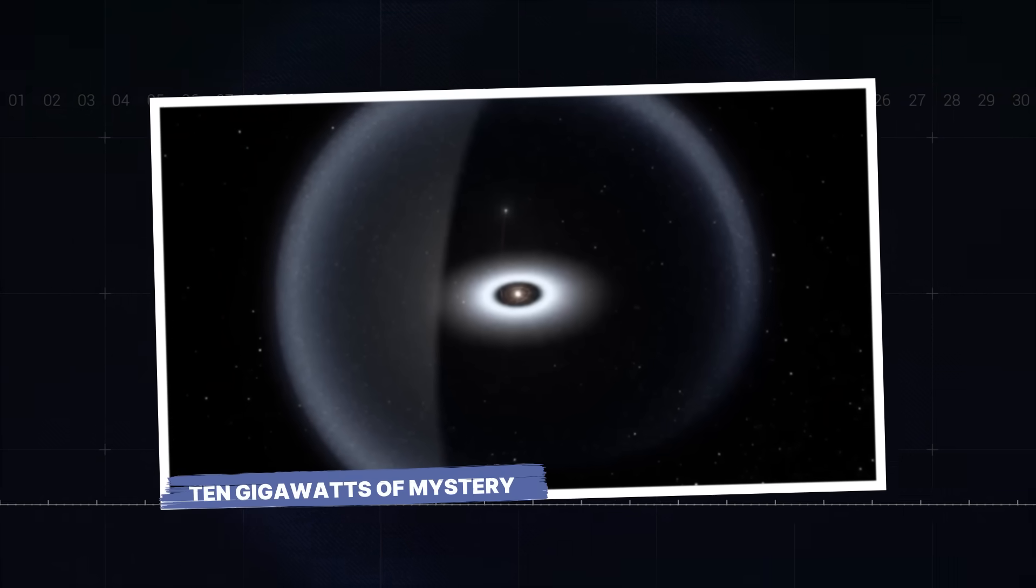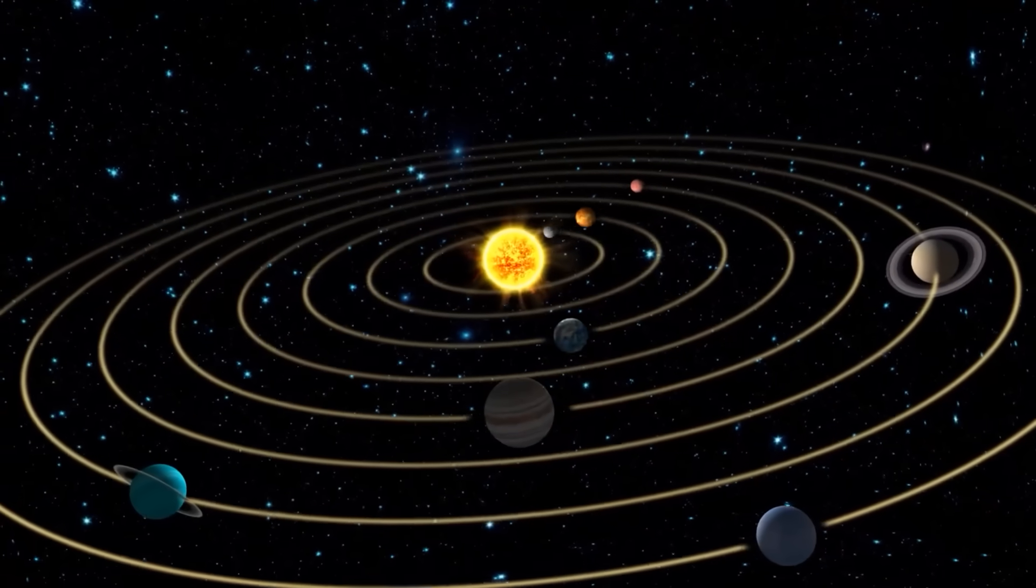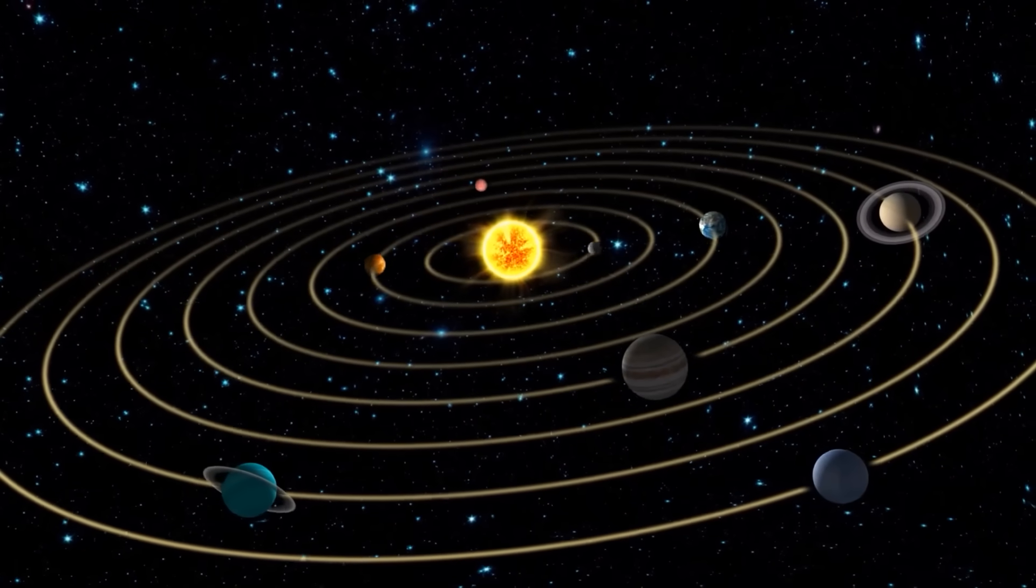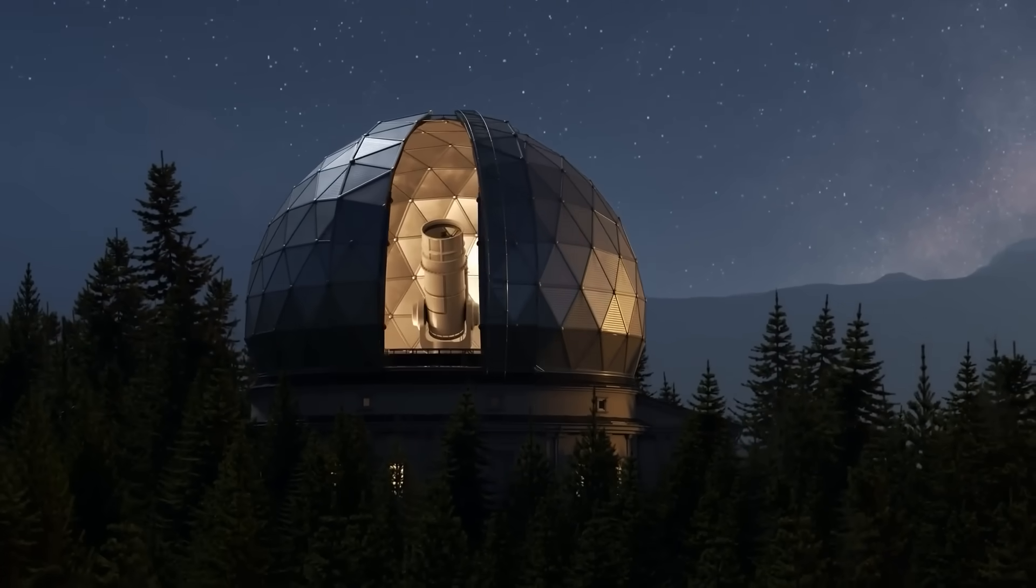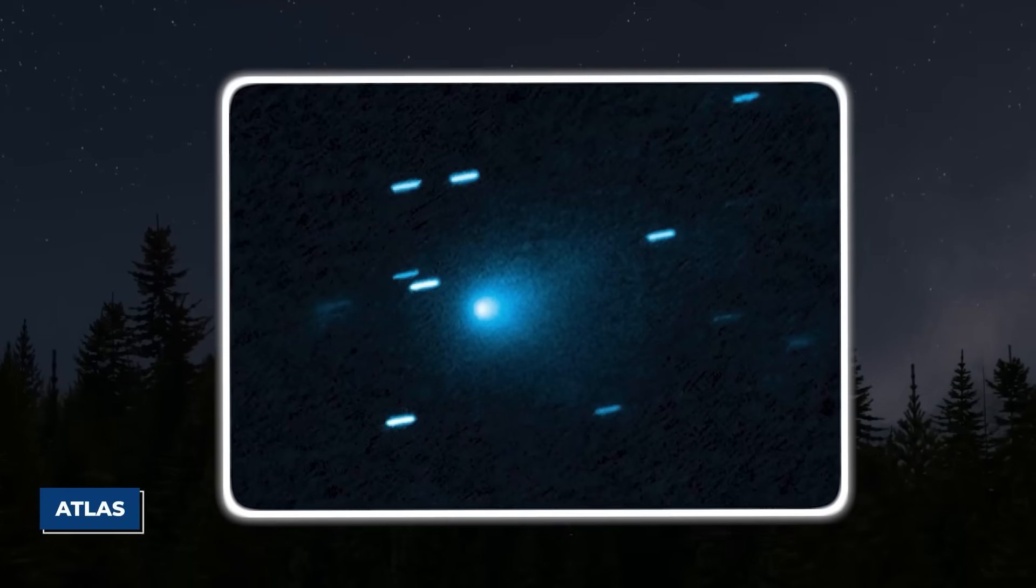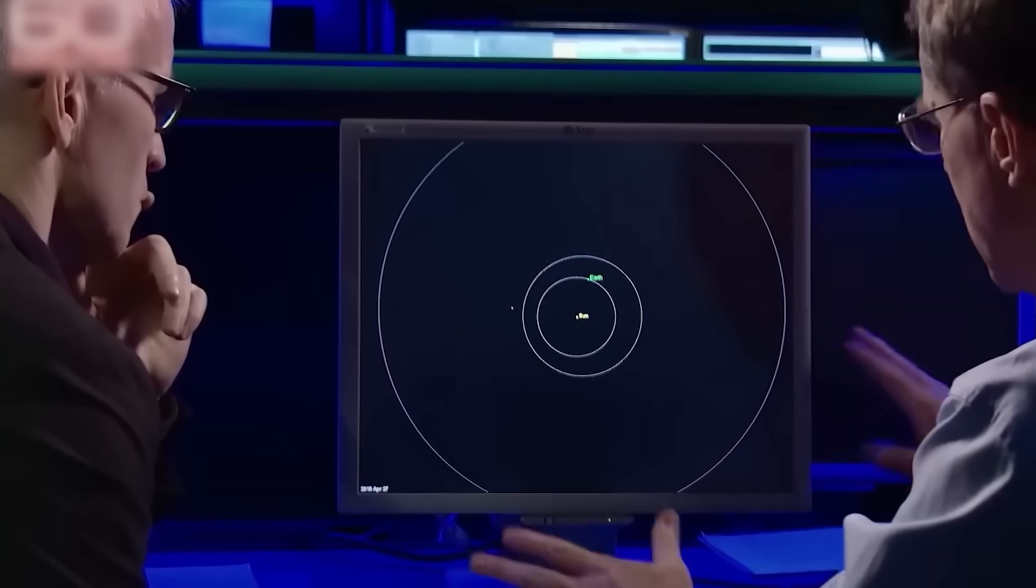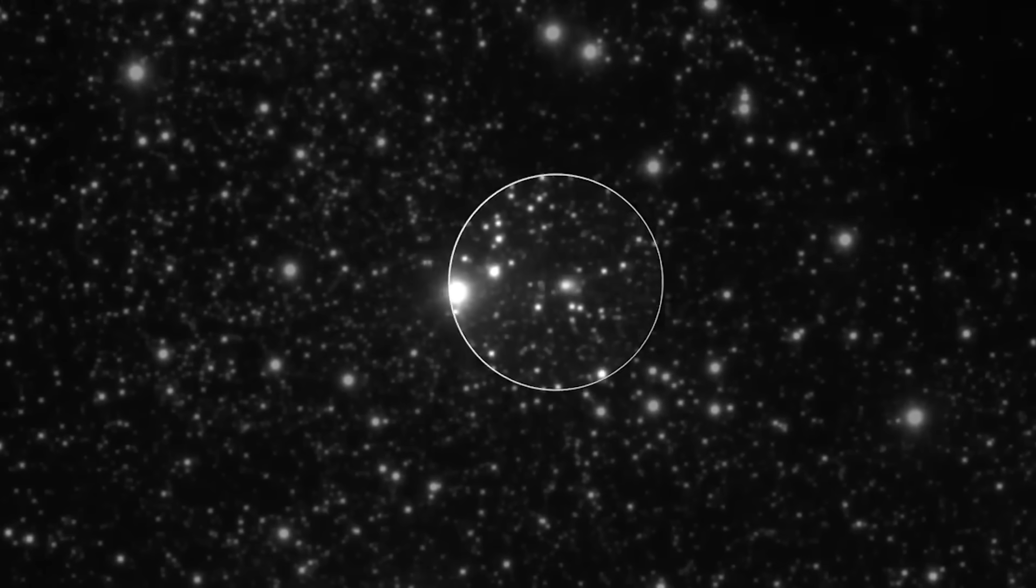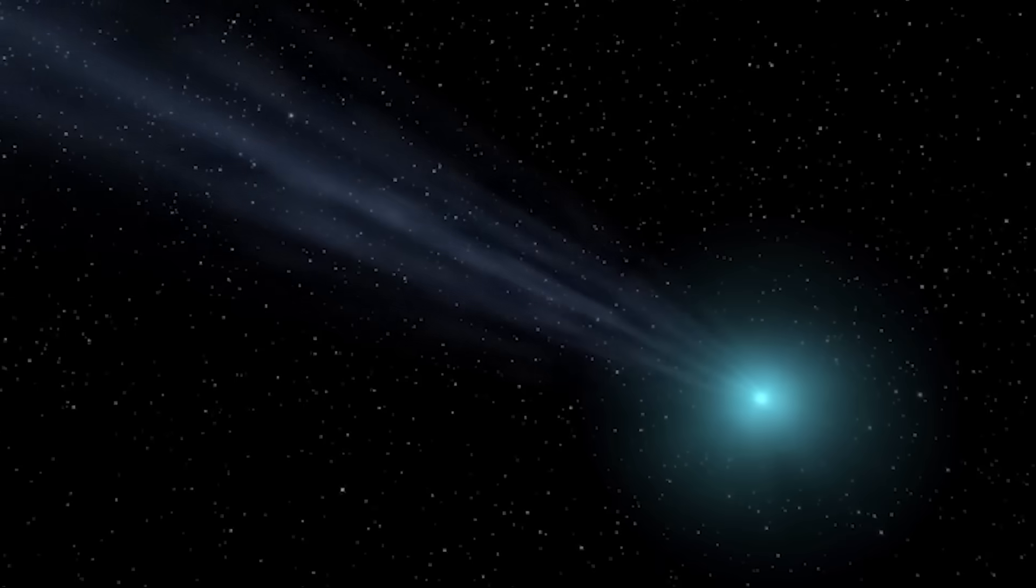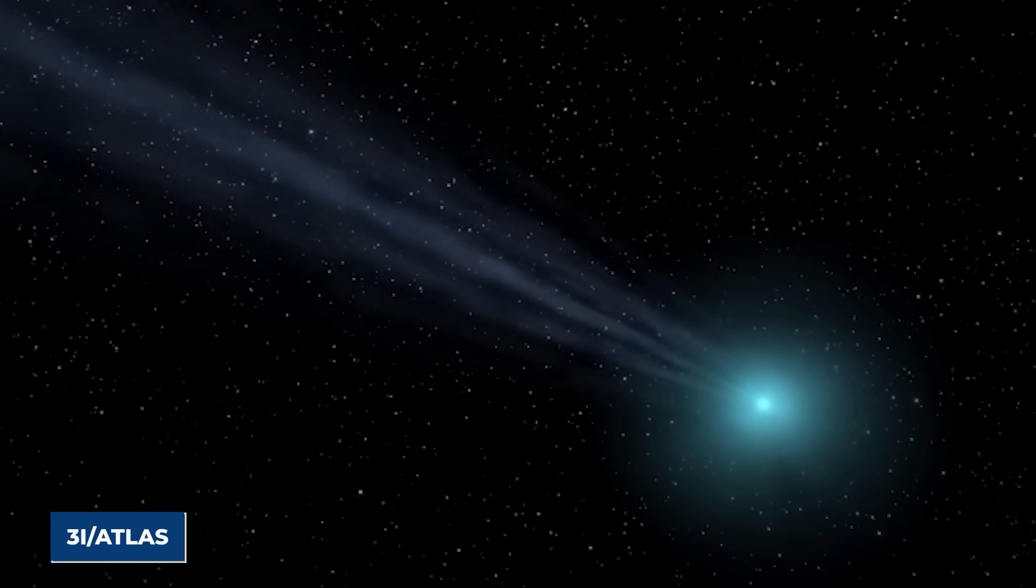Ten gigawatts of mystery. Something truly bizarre is flying through our solar system. On July 1, 2025, an automated telescope system called ATLAS, short for Asteroid Terrestrial Impact Last Alert System, pinged an alert. It had spotted our third-ever interstellar visitor, an object from another star system, and it was given the designation 3I Atlas.